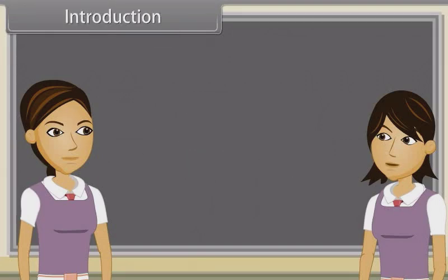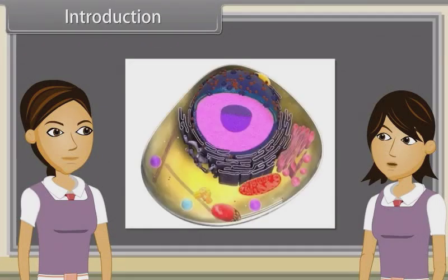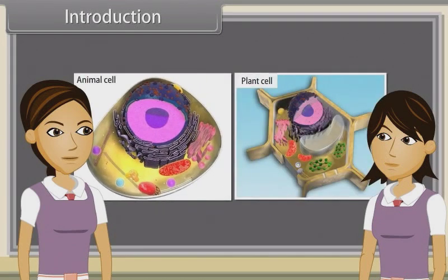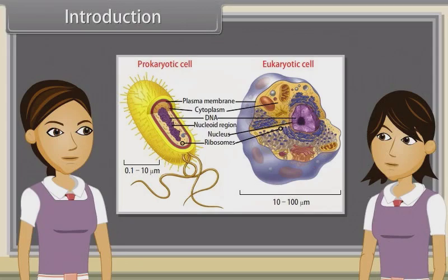Ankita, we have discussed cell theory, structure and functional regions of cell already. Now we'll discuss that there are two types of cells, plant cells and animal cells. We'll also observe the structure of plant and animal cells and discuss the difference between plant and animal cells, as well as prokaryotic and eukaryotic cells.